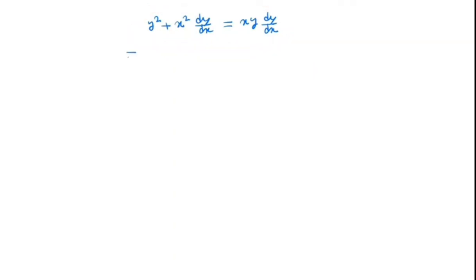So first let us try to simplify this equation. So we have y squared is equal to x y minus x squared dy dx. So we have dy by dx is nothing but y squared by x y minus x squared.